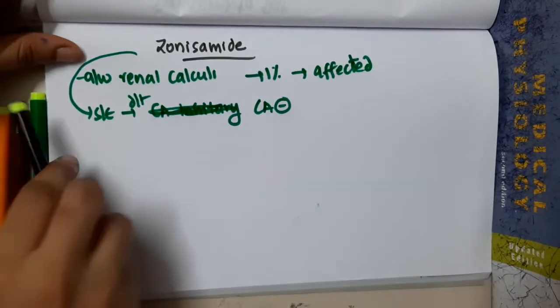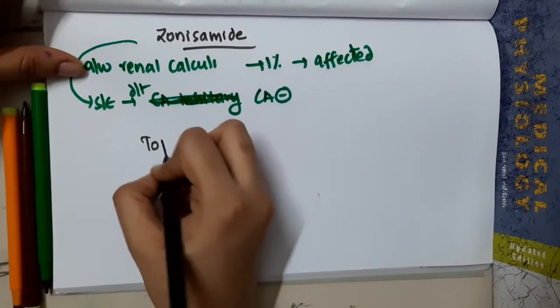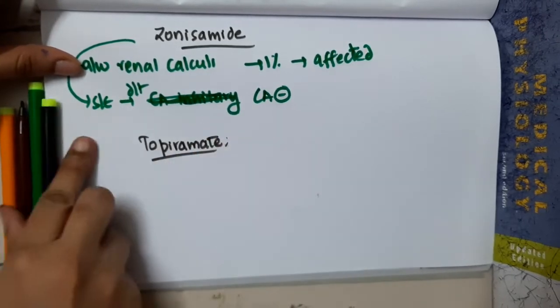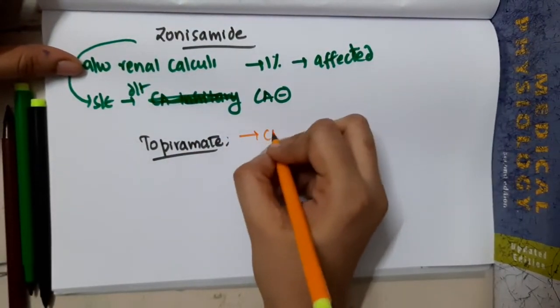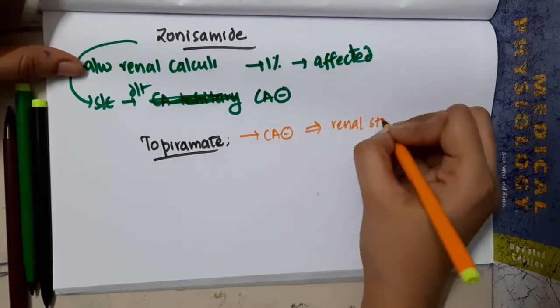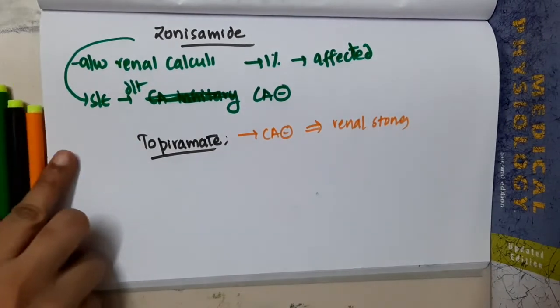One more drug which is associated with renal calculi is topiramate. This topiramate also has carbonic anhydrase inhibitory effects and thus it will also contribute to renal stones.